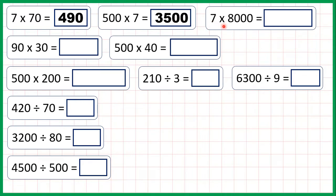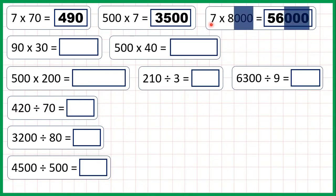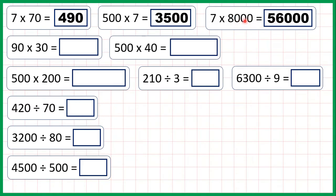7 times 8,000 is 56,000, because 7 times 8 is 56, and then we have three end zeros in the question, so we need three end zeros in our answer.